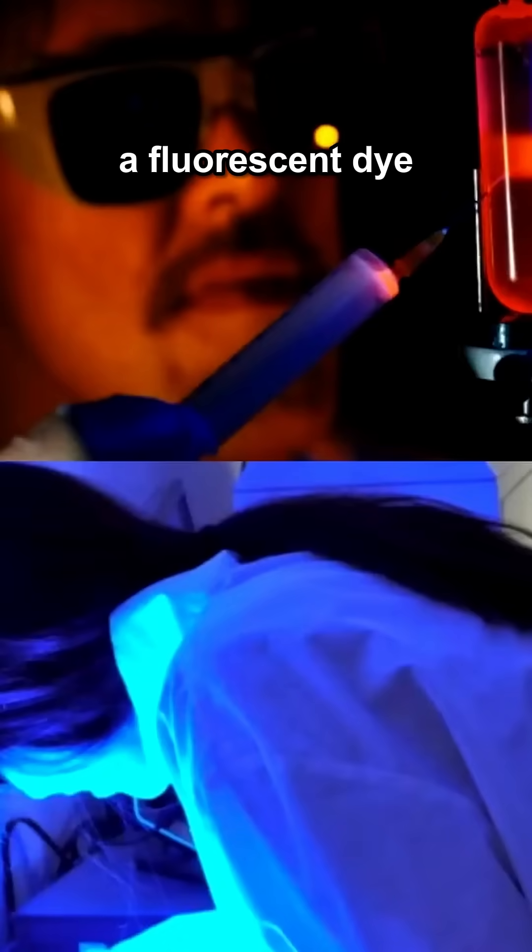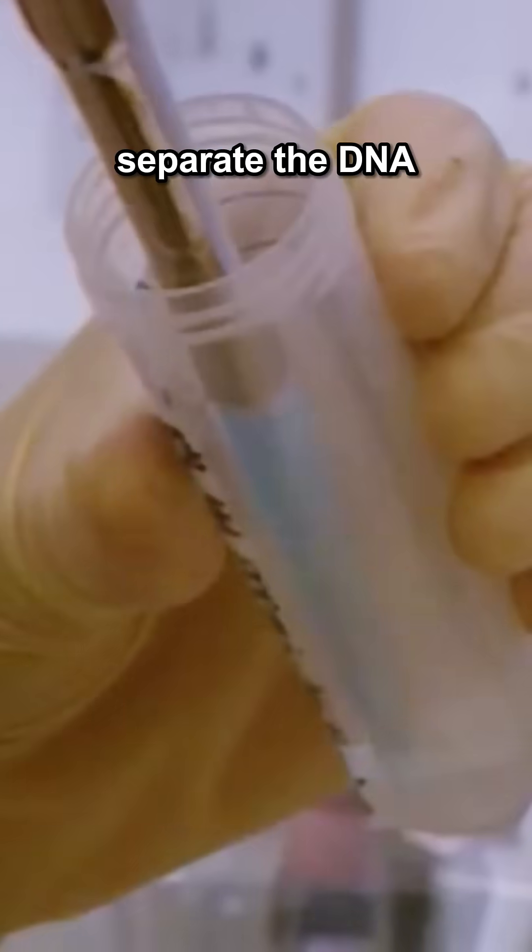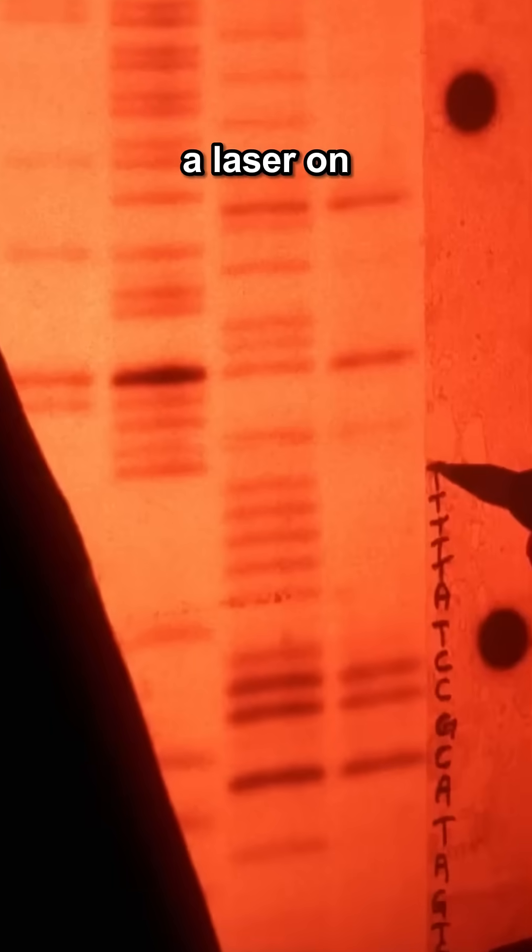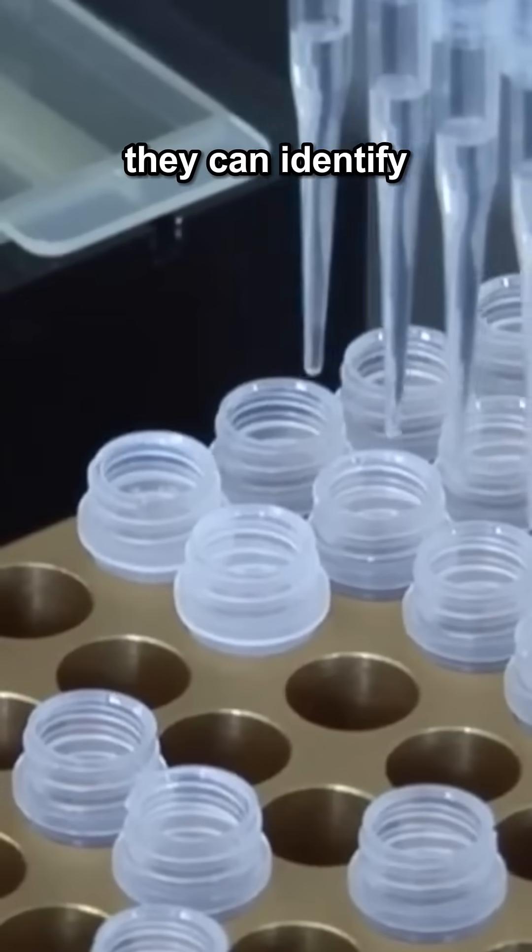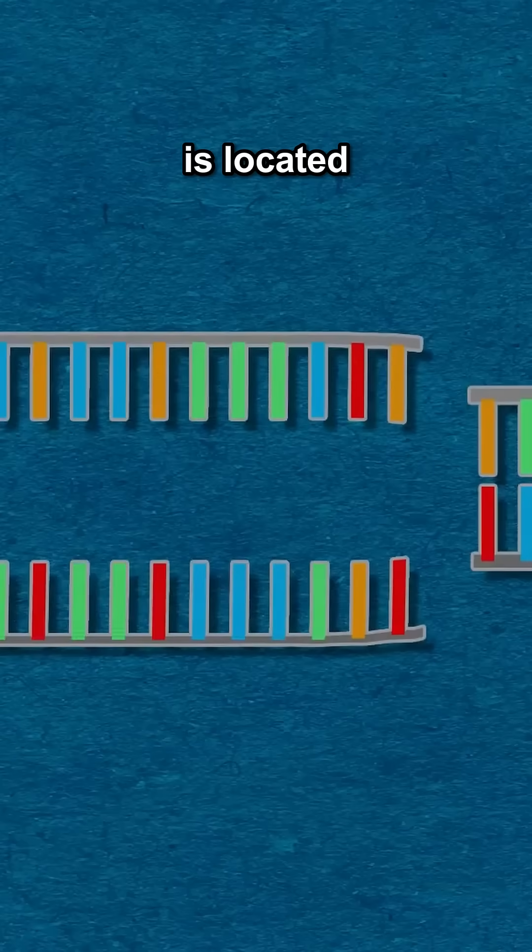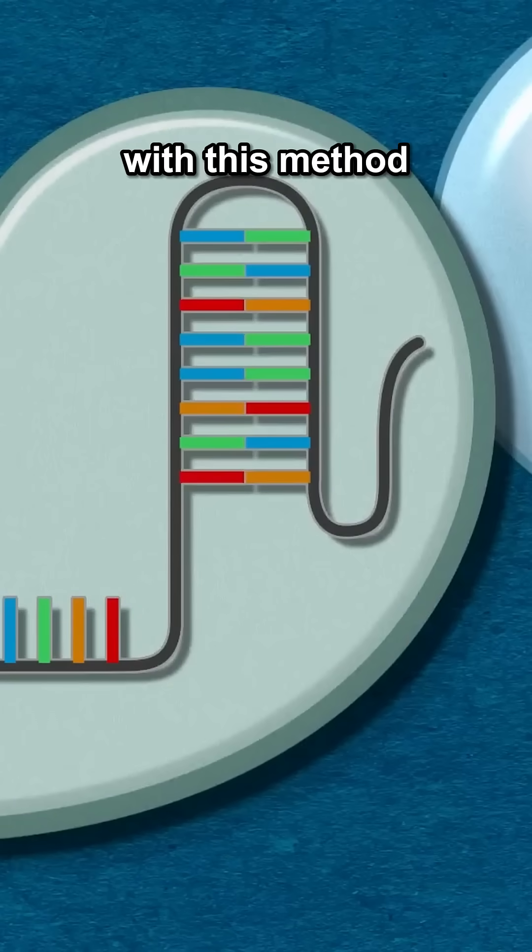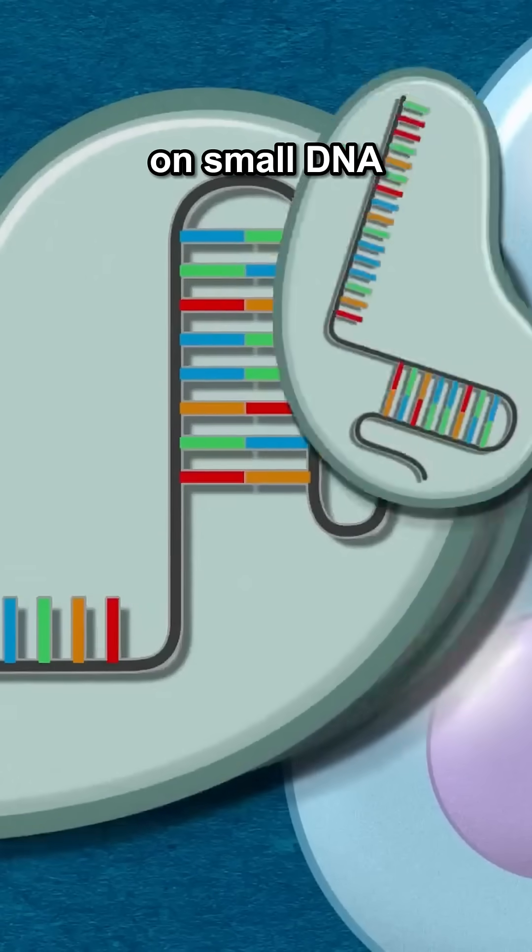At first they would attach a fluorescent dye to the bases, separate the DNA by weight, and then shine a laser on them. Depending on the glow, they can identify which nitrogen base is located where. But there was a problem with this method. It only worked on small DNA strands.